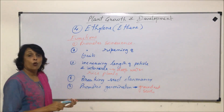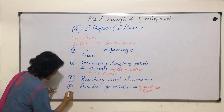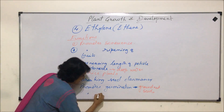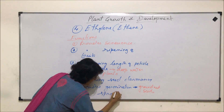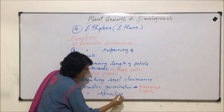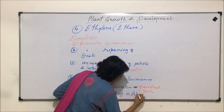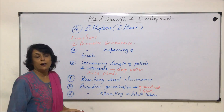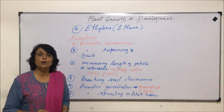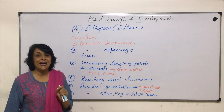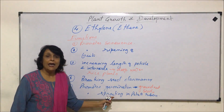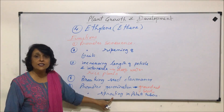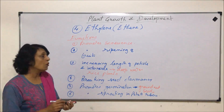It also promotes sprouting in potato tubers. On the potato tubers there are scars known as the eyes of potatoes, and from there buds develop very fast if the ethylene concentration is higher.